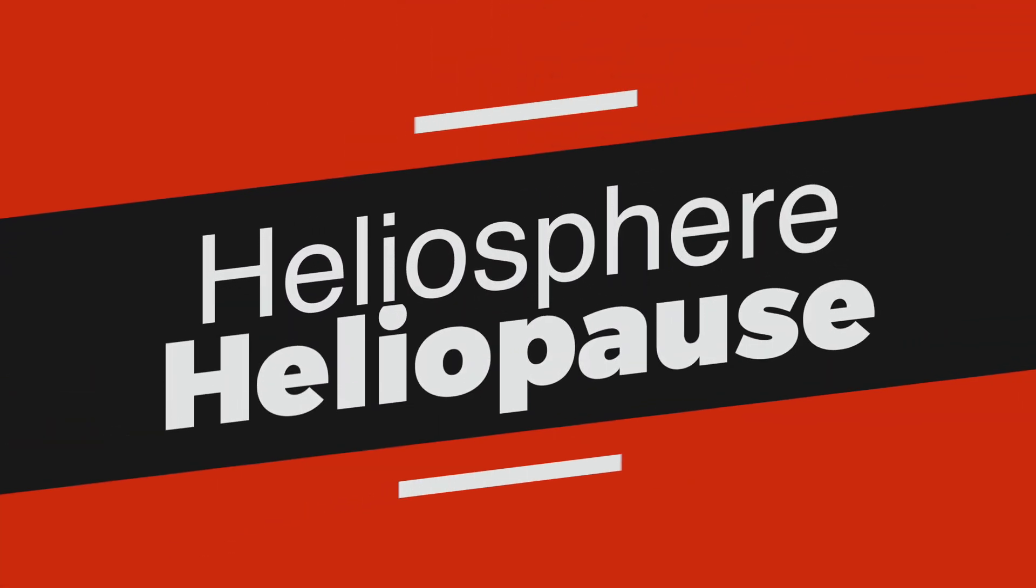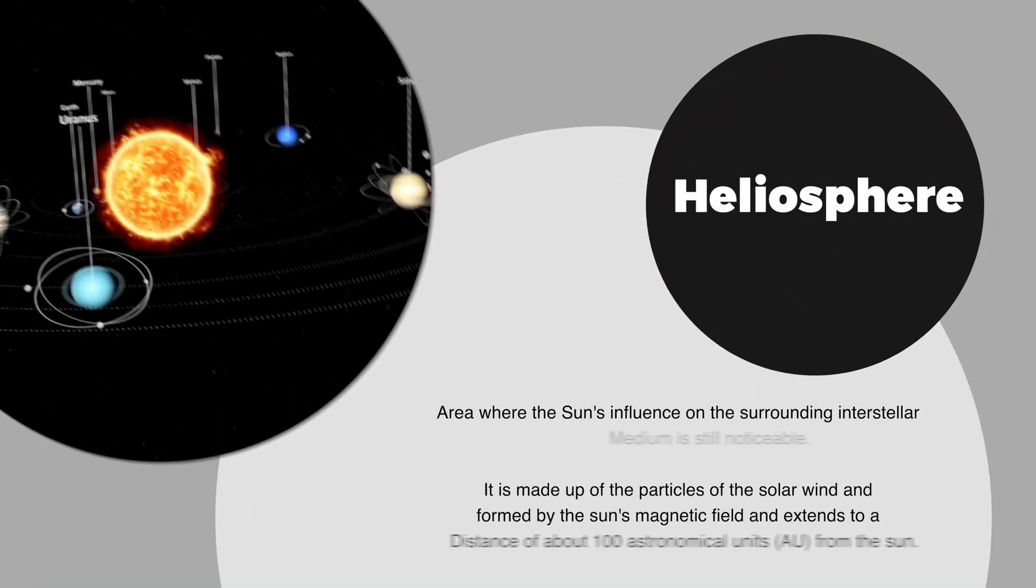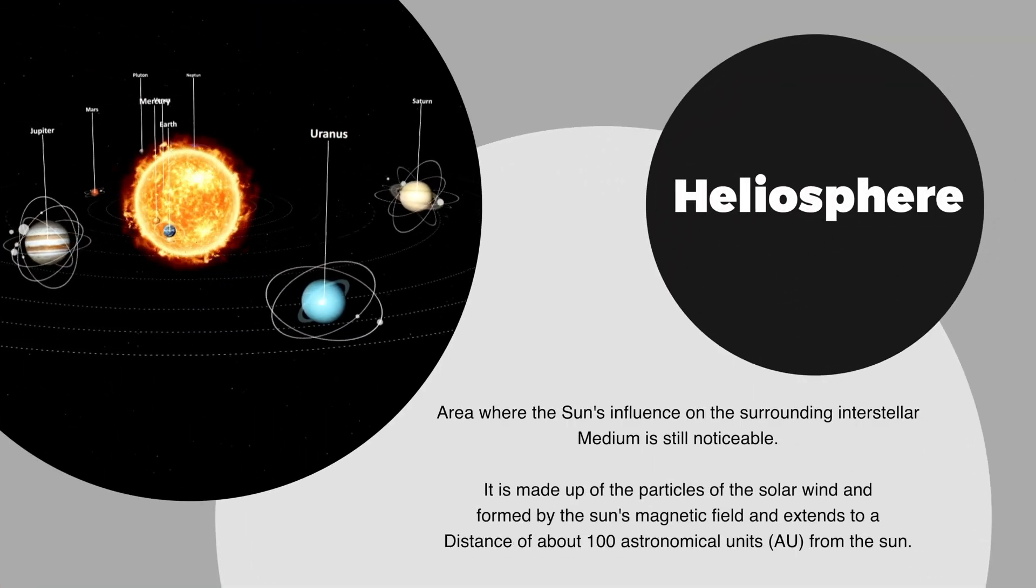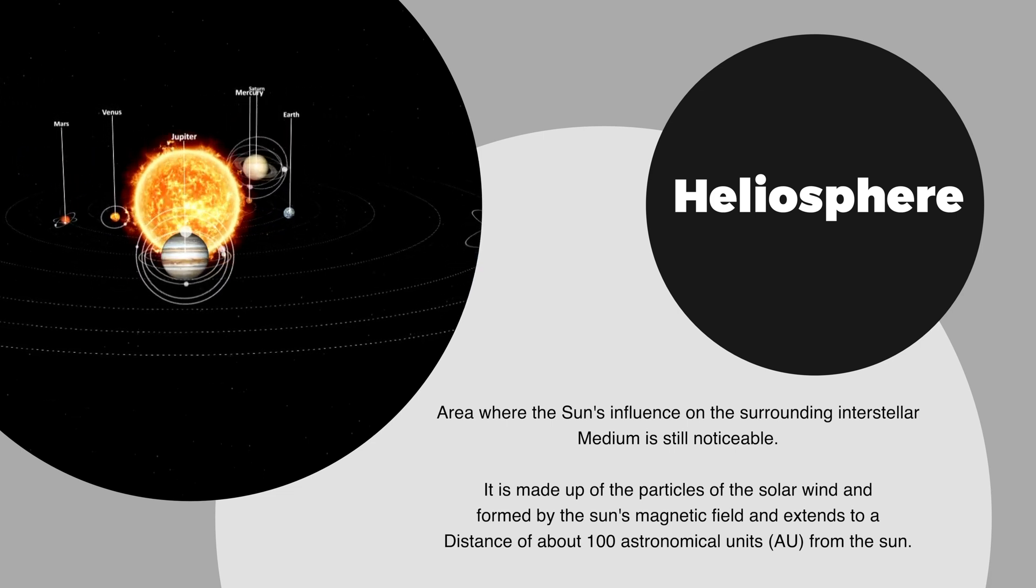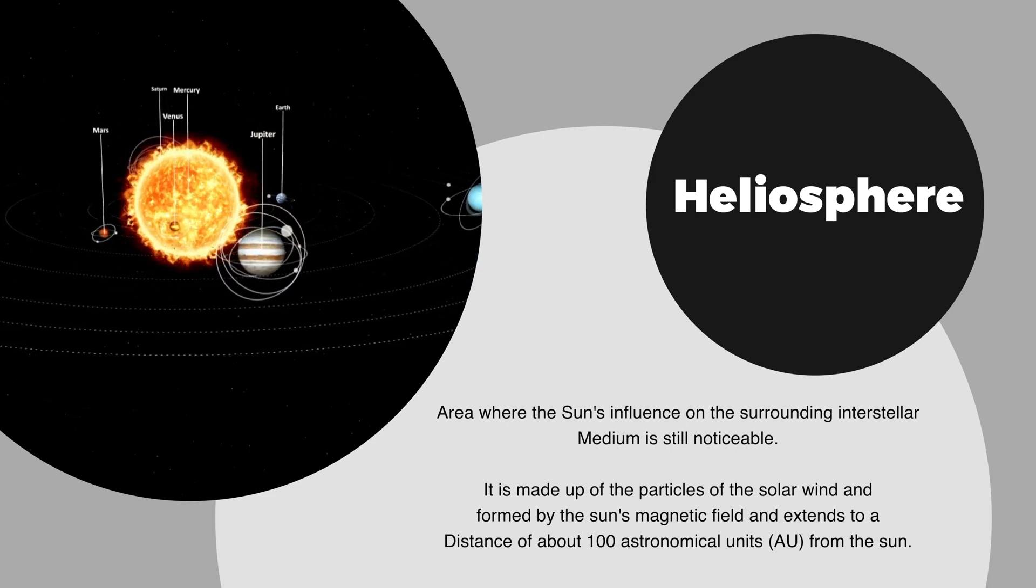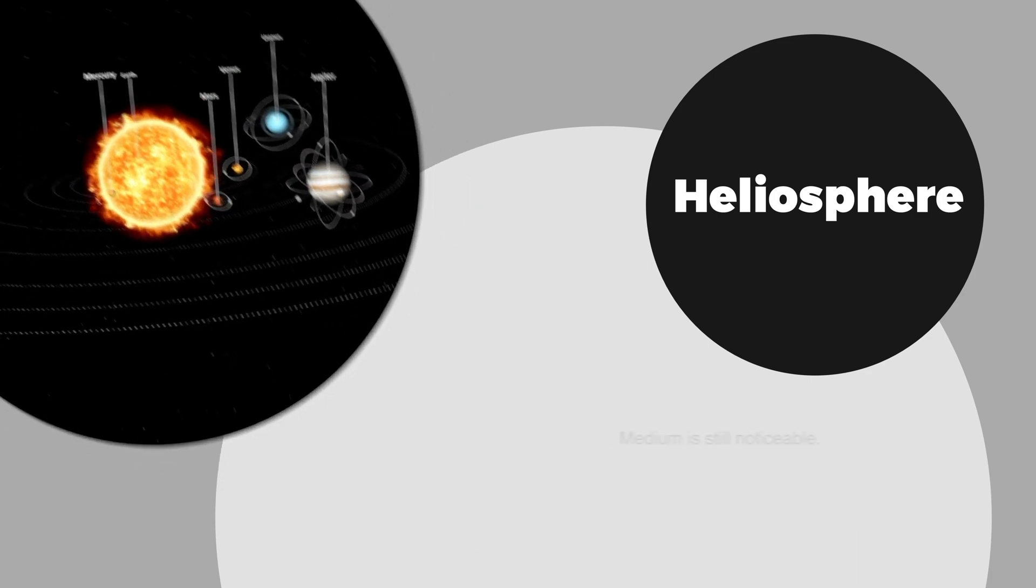Heliosphere and Heliopause: The heliosphere is the region where the influence of the Sun on the surrounding interstellar medium is still noticeable. It is formed by the particles of the solar wind and the magnetic field of the Sun and extends to a distance of about 100 astronomical units from the Sun.